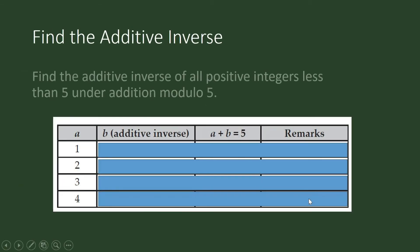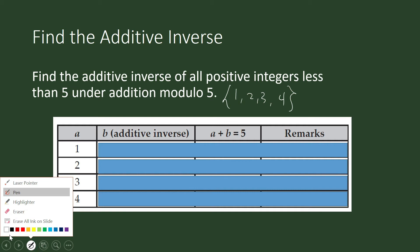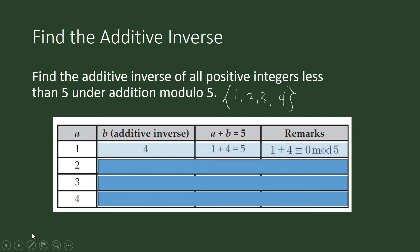Find the additive inverse of all positive integers less than 5 under addition modulo 5. The integers we are concerned with are 1, 2, 3, and 4. What is the additive inverse of 1? What must you add to 1 so that the sum is 5? Obviously it's 4. So the additive inverse of 1 under addition modulo 5 is 4, because 1 plus 4 is 5, and 5 is congruent to 0 modulo 5.